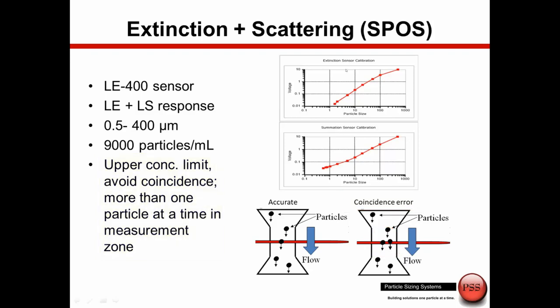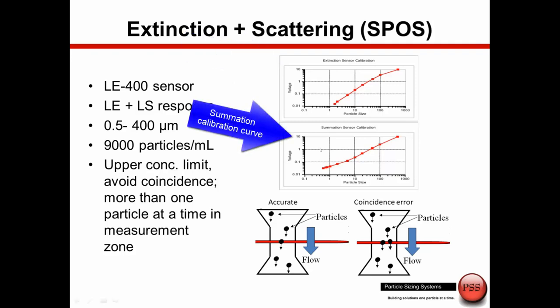What we see here are calibration curves. This is a calibration curve using only the extinction detector, which we may use for applications where we don't need to measure down to 0.5 microns. And this is a calibration curve for the summation mode where we use both extinction and scattering detectors.